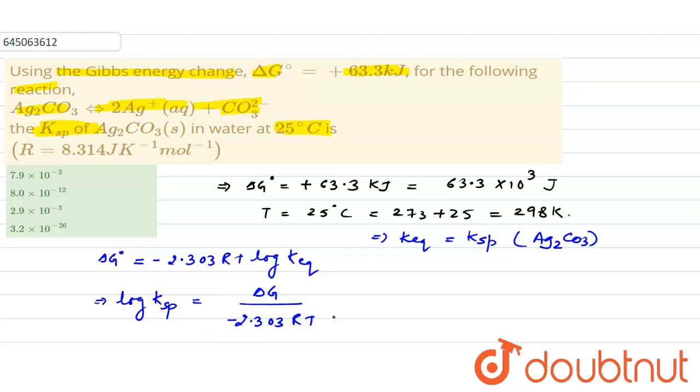When we put in the values, we will get log Ksp = 63.3 × 1000 divided by 2.303, where R is the universal gas constant 8.314, and temperature is 298 Kelvin.